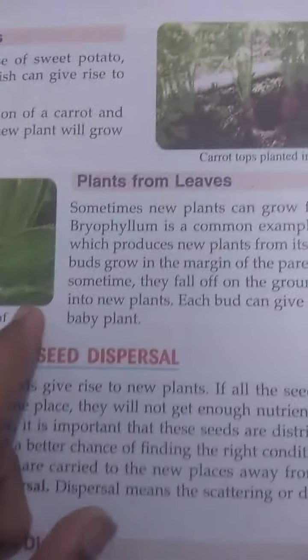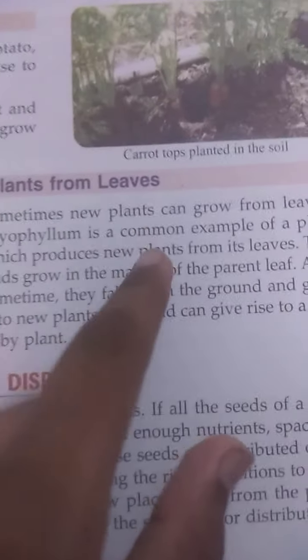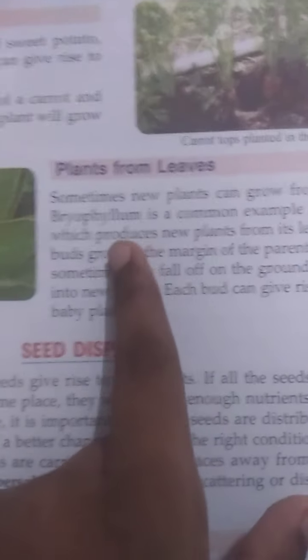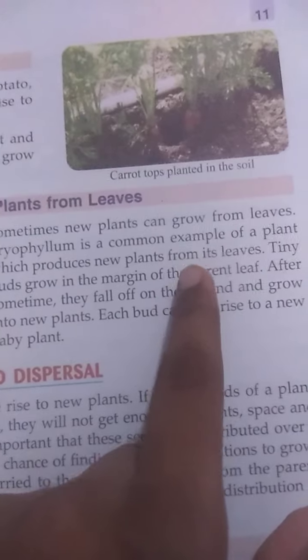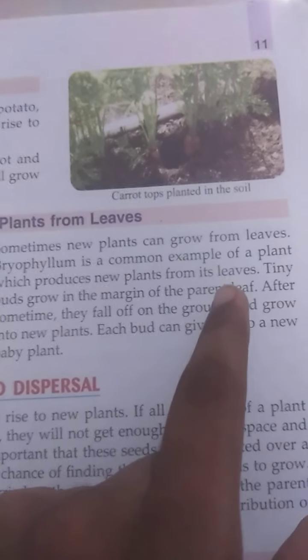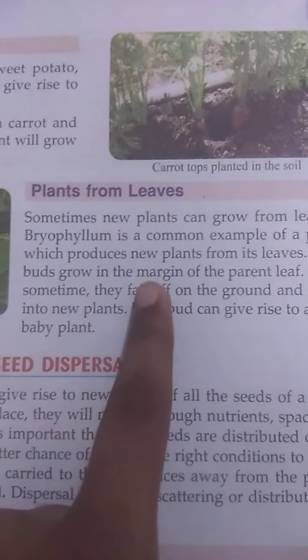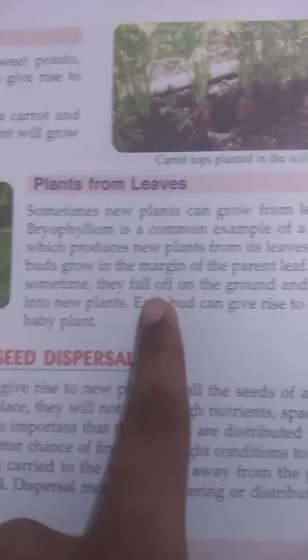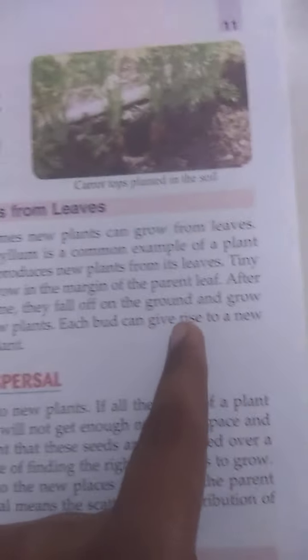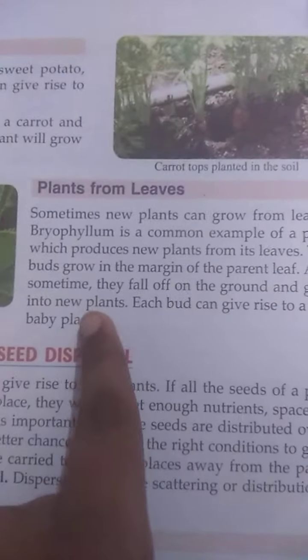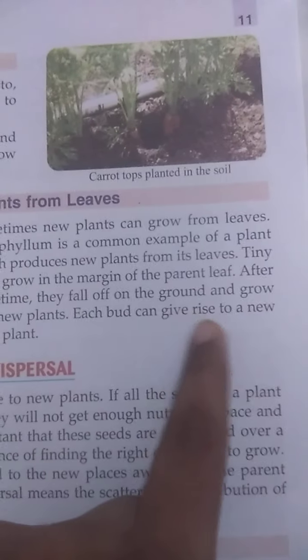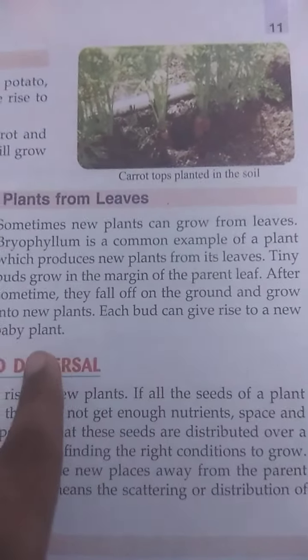New plants from leaves: sometimes new plants can grow from leaves. Bryophyllum is a common example of a plant which produces new plants from its leaves. Tiny buds grow in the margins of the parent's leaves, and after some time they fall on the ground and grow into new plants. Each bud can give rise to a new baby plant.